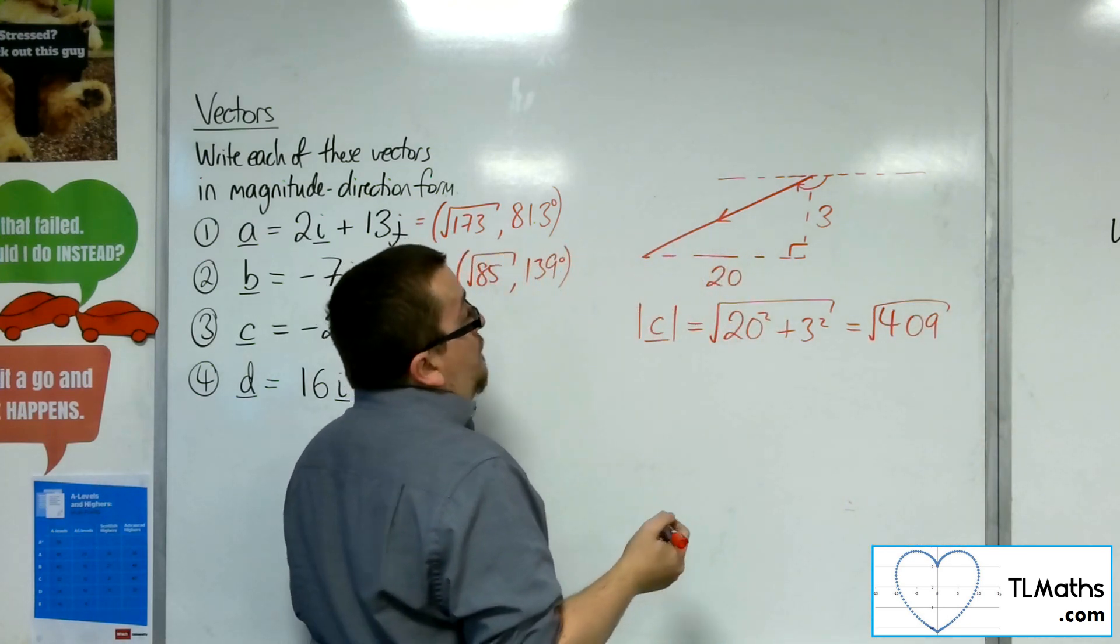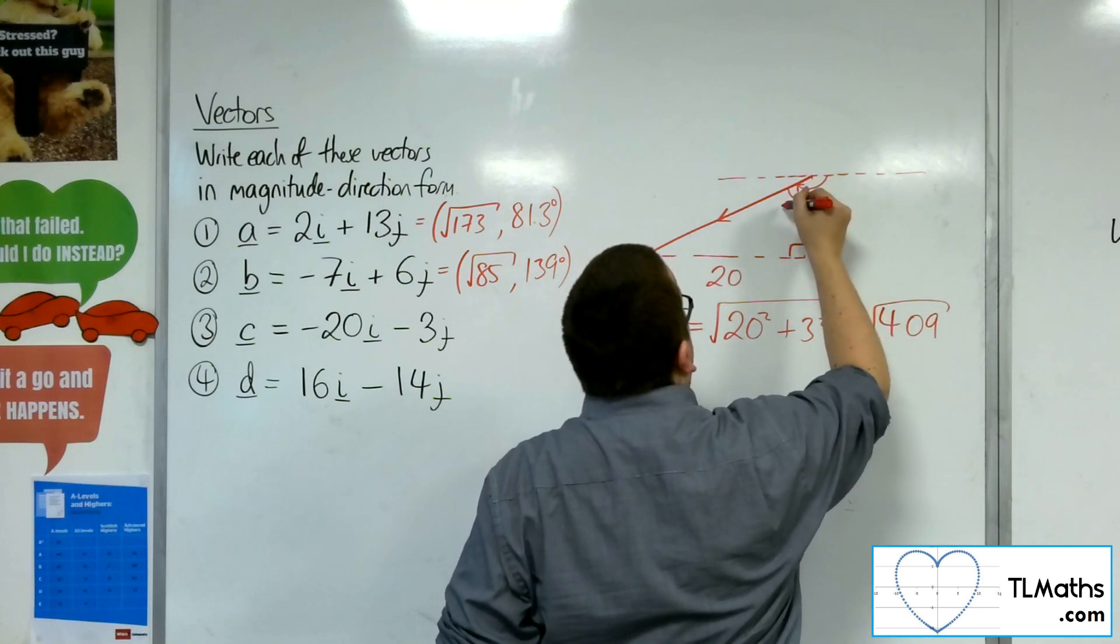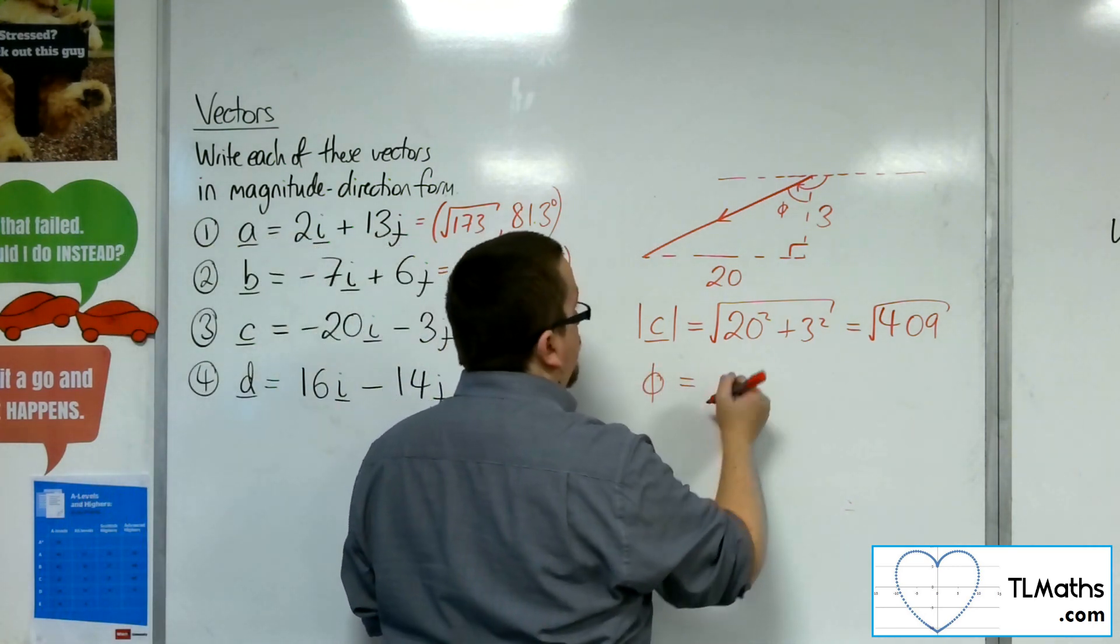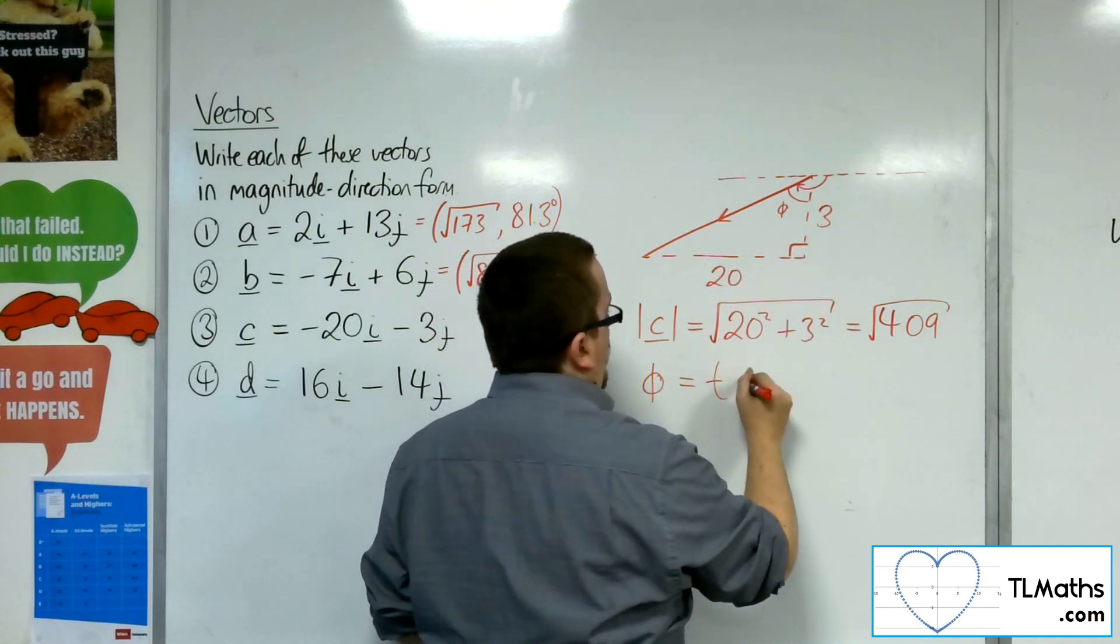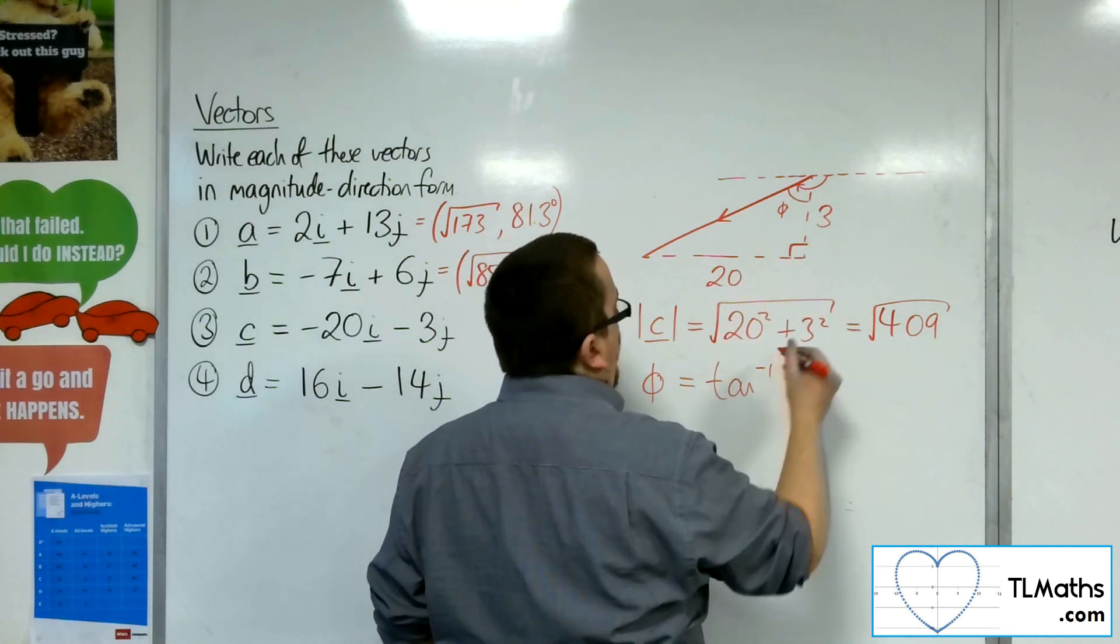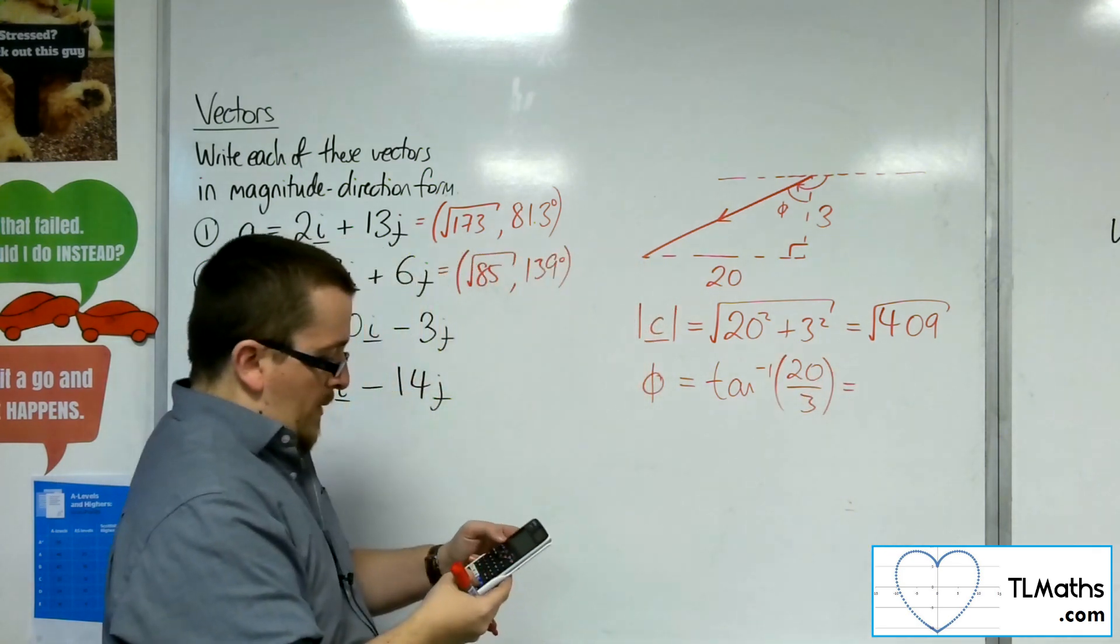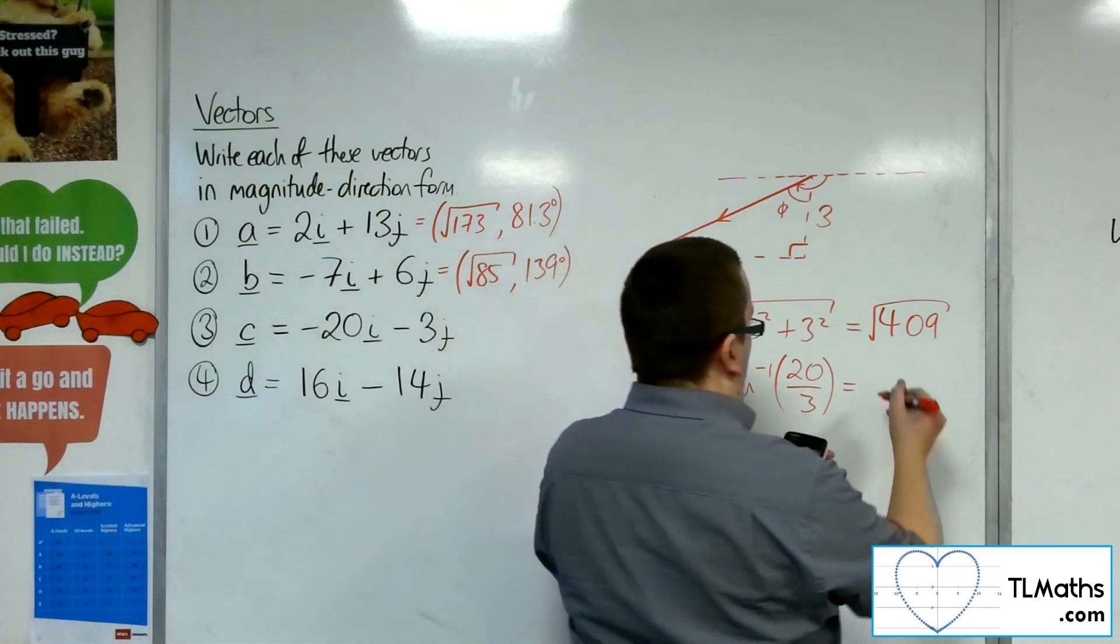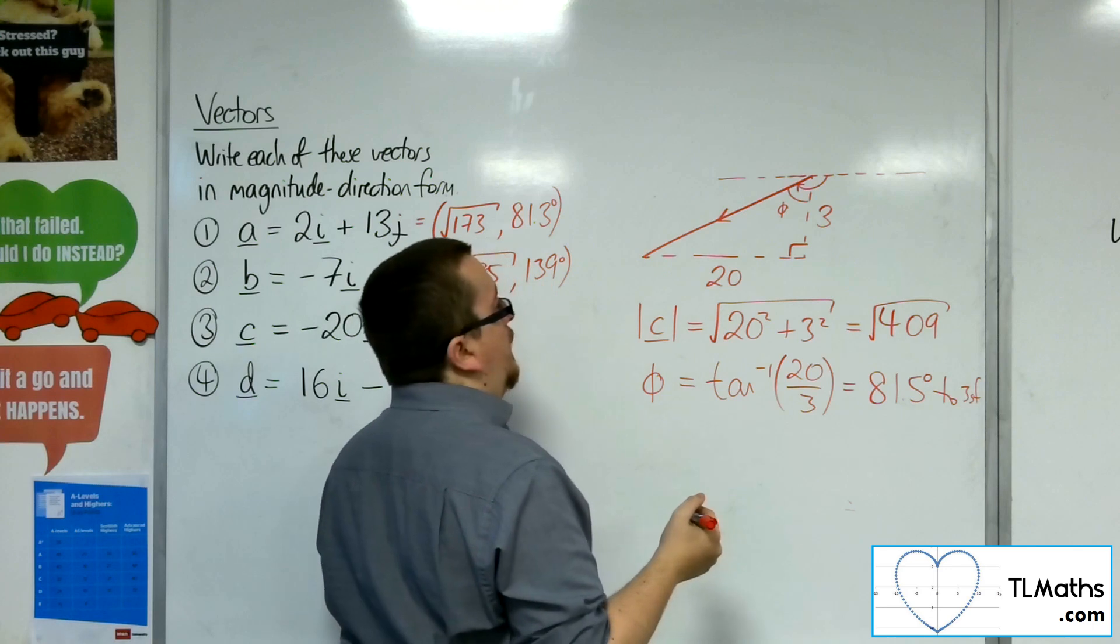Now, as for the direction, I can work out that angle there. So, let's call that angle phi. So, phi, that's the opposite, that's the adjacent. So, we'll be the inverse tan of 20 over 3. So, inverse tan of 20 over 3 is 81.5 degrees to 3 sig fig.